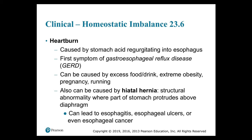Clinical homeostatic imbalance 23.6: heartburn is caused by stomach acid regurgitated into the lower section of the esophagus. It is the first symptom of gastroesophageal reflux disease (GERD), which can be caused by excess food or drink, extreme obesity, pregnancy, and running. It can also be caused by hiatal hernia — a structural abnormality where part of the stomach protrudes above the diaphragm. GERD can lead to esophagitis, esophageal ulcers, or even esophageal cancer.